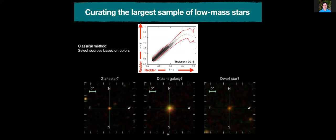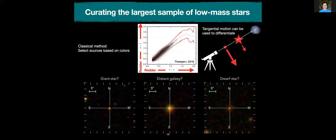All hope is not lost because there's a way to break this degeneracy. We can actually measure the tangential motion of objects on the sky to figure out which one is a star versus more distant objects. A low mass star, which tends to be nearer because it's fainter, will have a measurable motion on the sky over years or decades. Giant stars will have very little motion, and galaxies should have approximately zero motion over these time baselines. So just by measuring the motions of the stars, we can discriminate between low mass stars and these other types of objects.